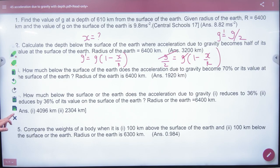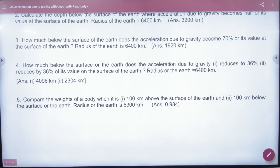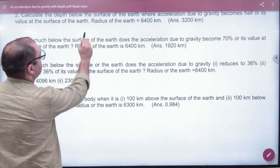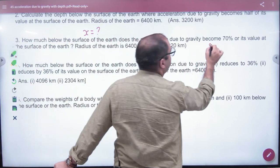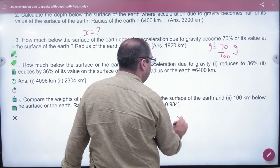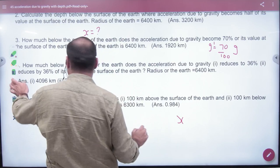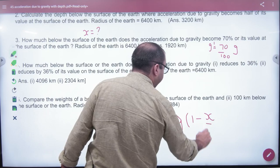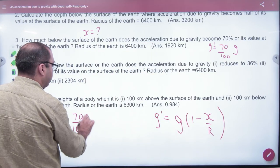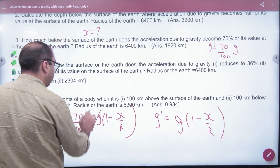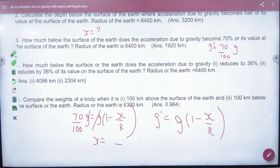Third question. How much below the surface of the earth do we need to find? x. Acceleration due to gravity becomes 70% of the surface value. So the formula: g' = g(1 - x/R). g' is 70% of g, so 0.7g = g(1 - x/R). We solve for x in terms of R. The given value gives the answer.